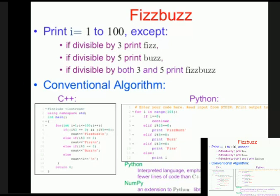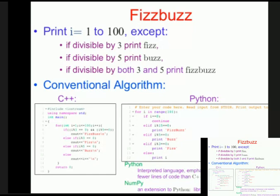You could also write the code in Python. If i is zero, continue; else if i % 15 == 0, print fizzbuzz; if i % 5 == 0, print buzz; or fizz, and so on. That's the Python code. Contrasting C++ and Python: Python is an interpreted language, emphasizes code readability, fewer lines of code than C++ or Java, and has a library called NumPy - an extension providing functions to operate on arrays.